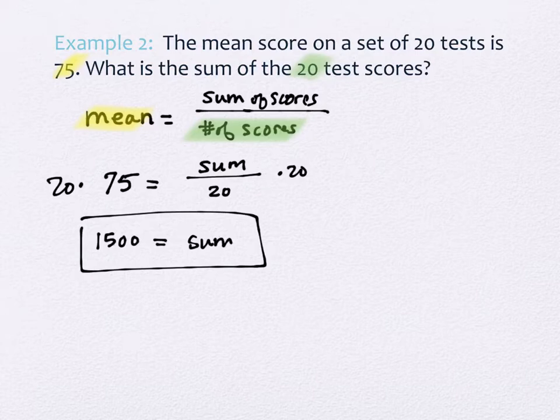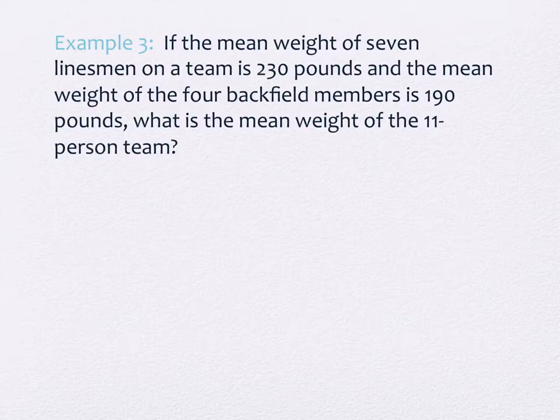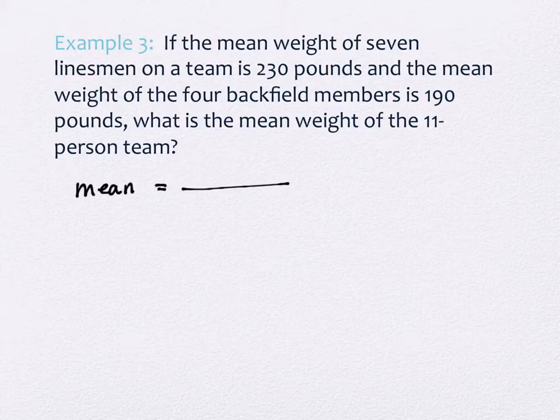Okay, now we're going to take that idea just a little bit further. This problem talks about football. I don't know how much you know about football. I know very little, but I can do the problem, so it'll be all right. If the mean weight of seven linesmen on a team is 230 pounds and the mean weight of the four backfield members is 190 pounds, what is the mean of the 11-person team?